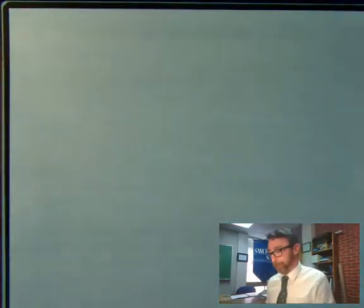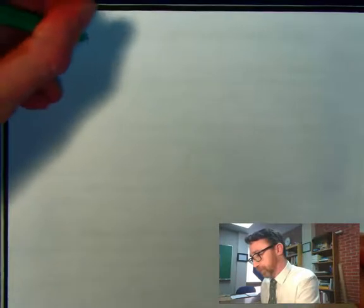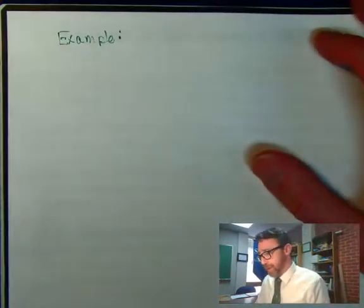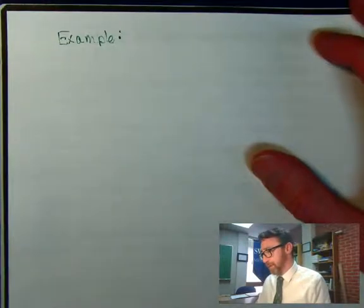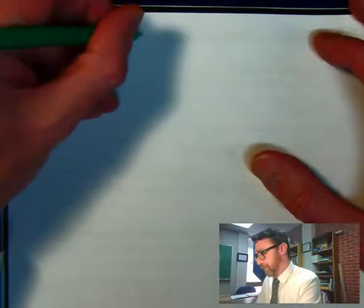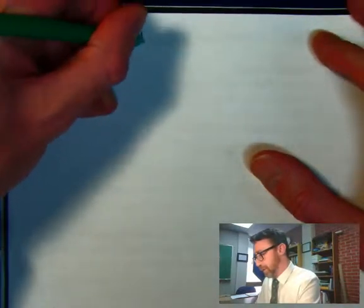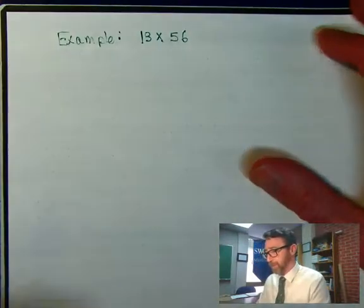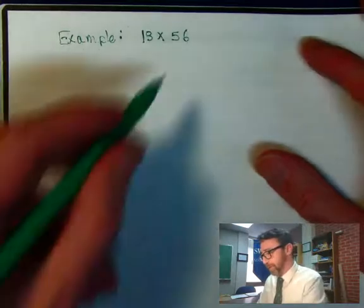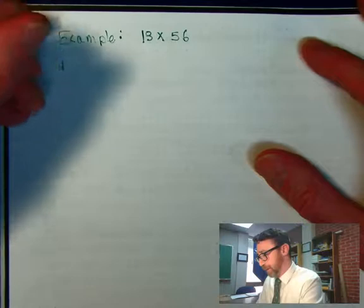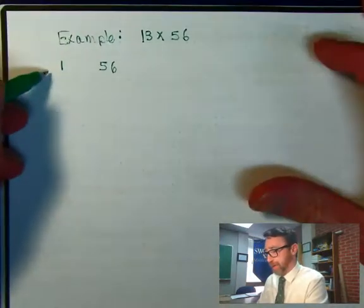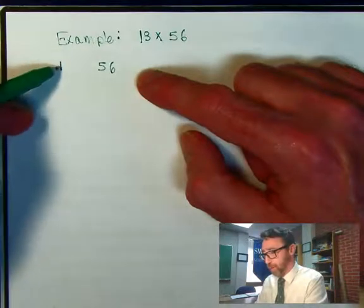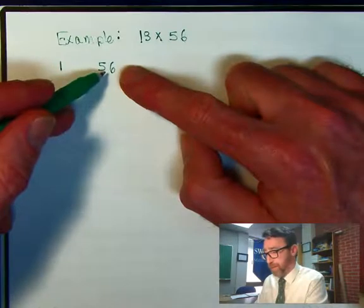So we'll start out with an example. And the procedure will be the same no matter what numbers you use. Let me jump into things with a couple of two-digit numbers. Let's do 13 times 56. So the way we would start out is I like to put the second factor over here in the second column. So we're going to be making a little table here with two columns. The first row in our table is always going to have a 1 over here, and this will be one of the factors that we're multiplying.